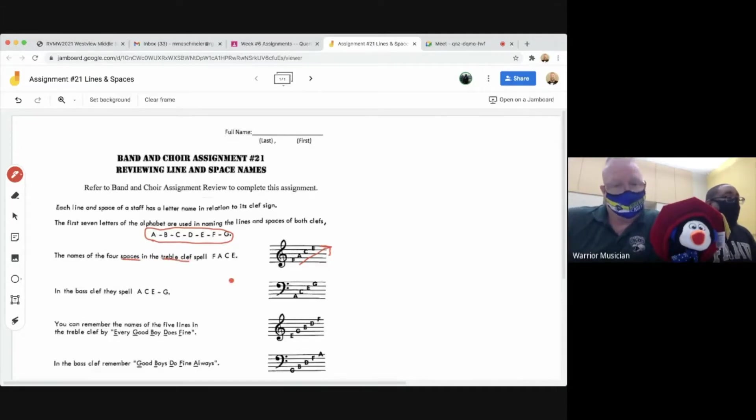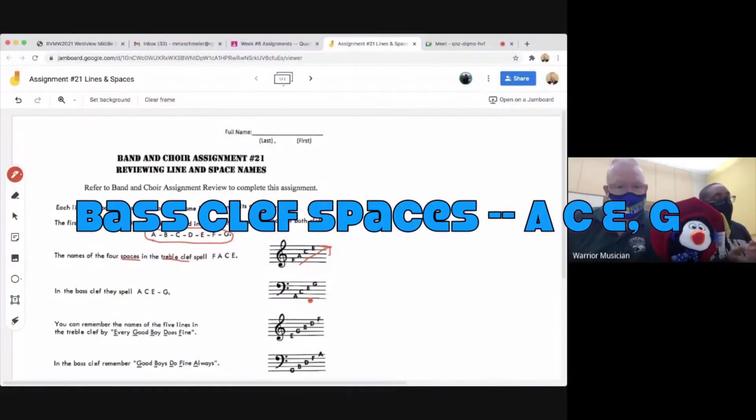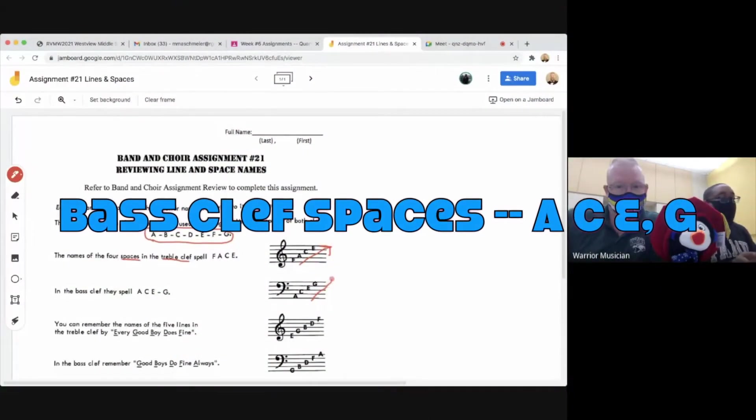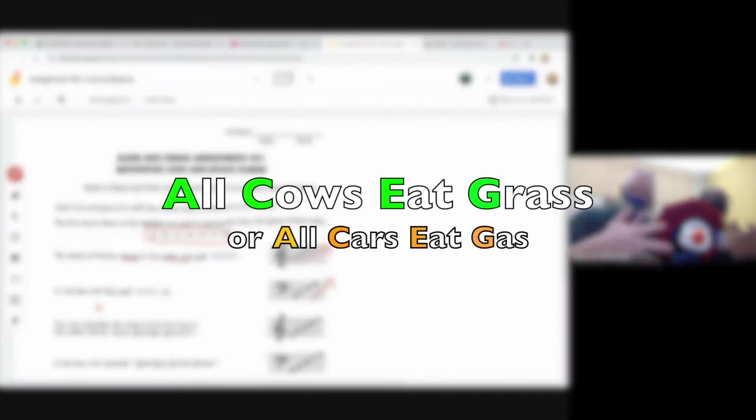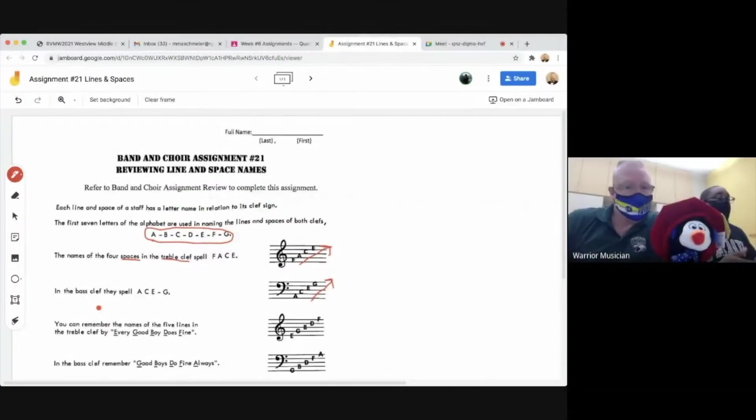Now looking at the next one, we're also looking at spaces, but this is for the bass clef. So in the bass clef, they spell the word ace, and then we have a G on the end of that, so A-C-E-G. A saying that helps us remember the letters of the spaces for the bass clef is all cows eat grass, or you can use all cars eat gas. Whatever little saying you can use to help you memorize it, use it.